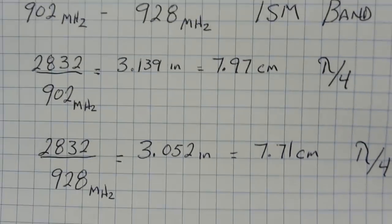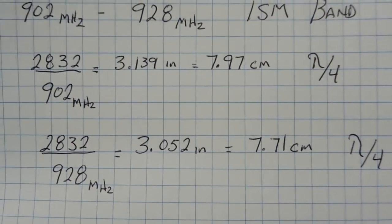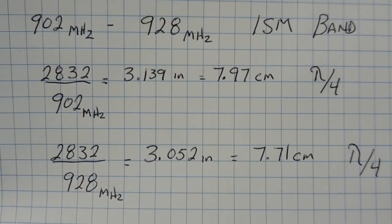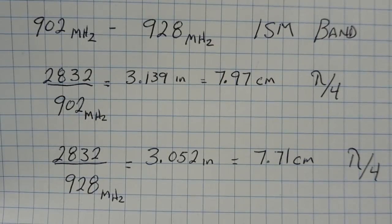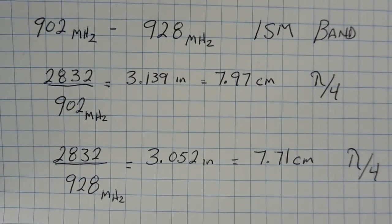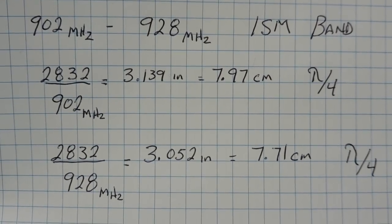So what I did, I cut all my lengths for 8 centimeters, and then I would solder them all into my connector. Then now I do my fine tuning, my trimming them, to get my VSWR less than 2 to 1.